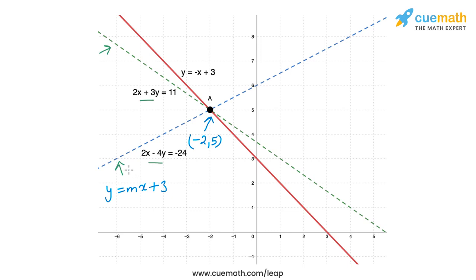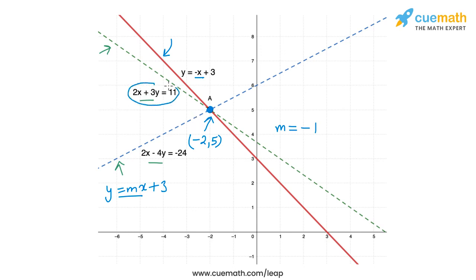From a graphical point of view, we need to find the value of m for which y equal to mx plus 3 also passes through the point minus 2 comma 5. That value of m turned out to be minus 1, and for m equal to minus 1 the equation is y equal to minus x plus 3, which is the line that also passes through point A. So the solution minus 2 comma 5 of the given pair of equations also satisfies y equal to minus x plus 3.